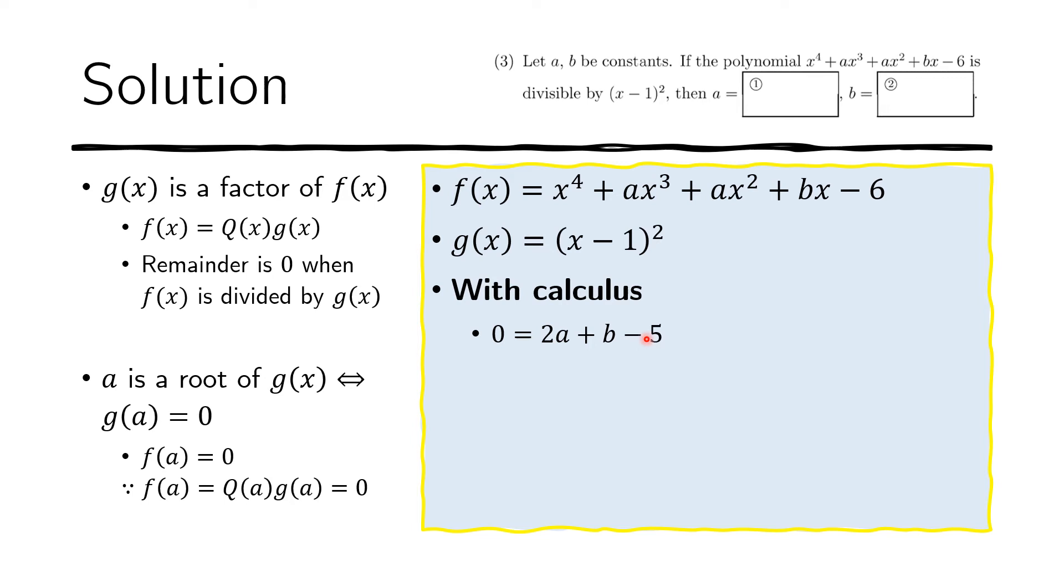Now we need the second equation. Normally, if we had a G of X that is not repeated—so in this case, we have a repeated G of X, so X minus one times X minus one. If we had a different G of X, like X minus one times X minus two, for example, then we can use again this bit here and we will find another equation. So we plug in the other root here and plug in the other root here.